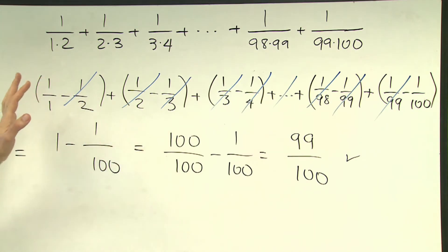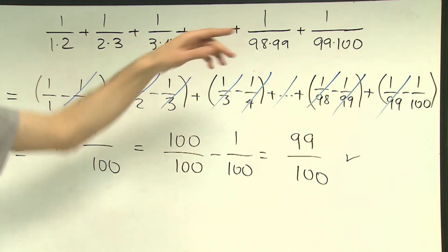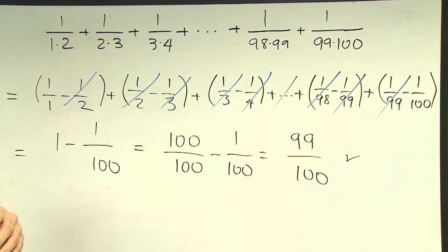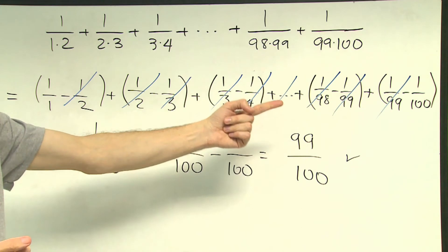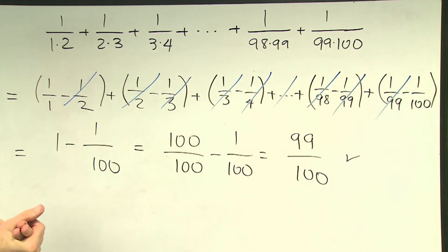And this goes on and on all the way to 1 divided by 99 times 100 where we can rewrite this as 1 over 99 minus 1 over 100. And the next line actually is about cancelling many many of these fractions because they are simply additive inverse of each other.